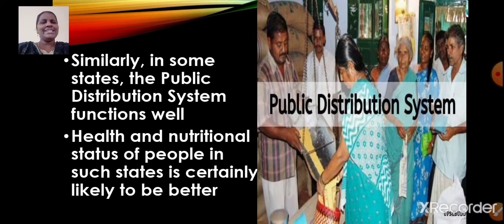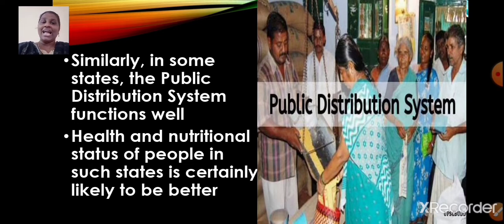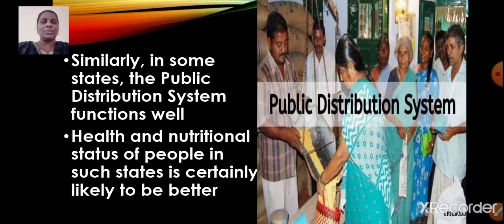Similarly, in some states the public distribution system functions well. In areas where the public distribution system functions well, people are found to be healthy and their nutritional status is better. The health and nutritional status of people in states where the public distribution system functions well is certainly likely to be better.